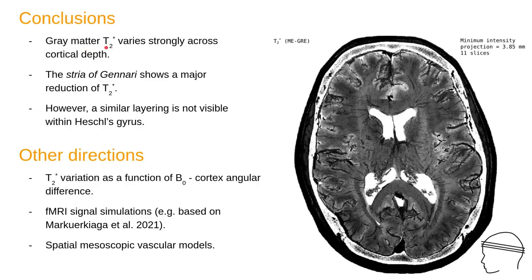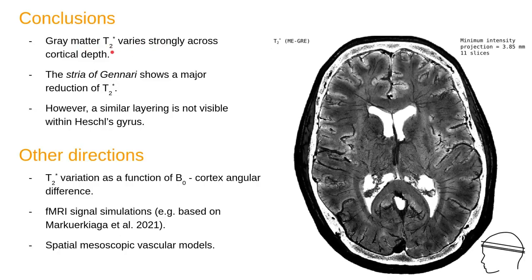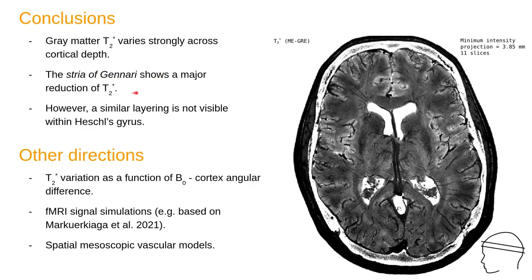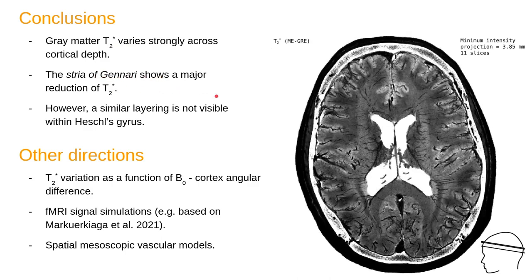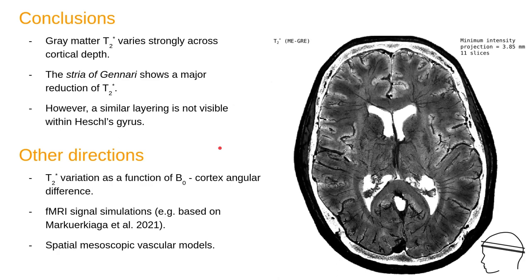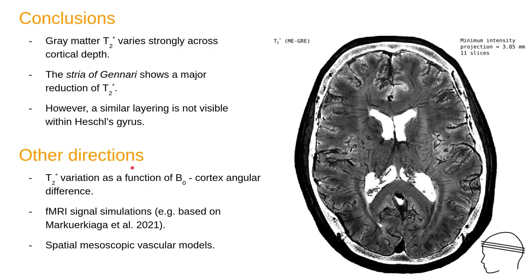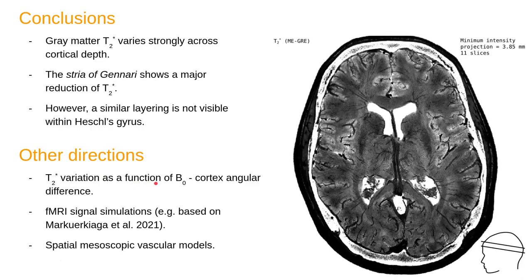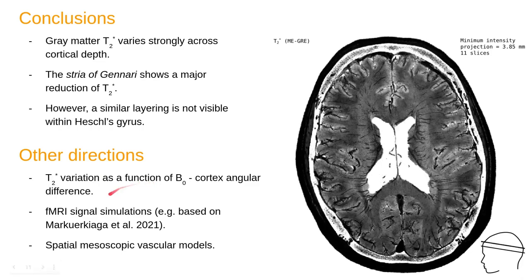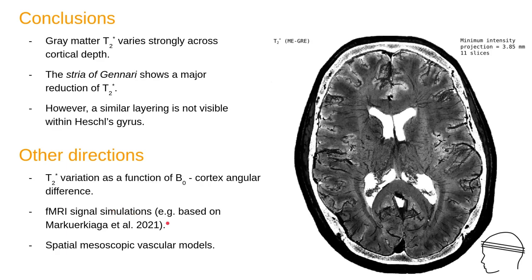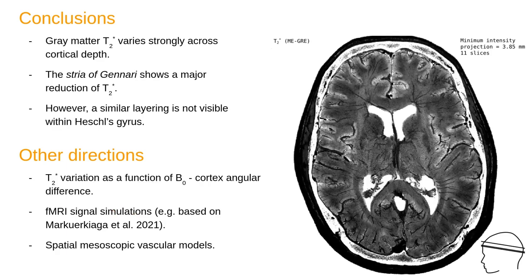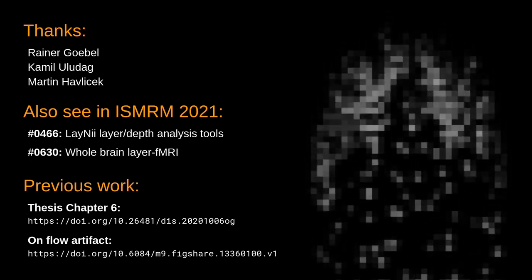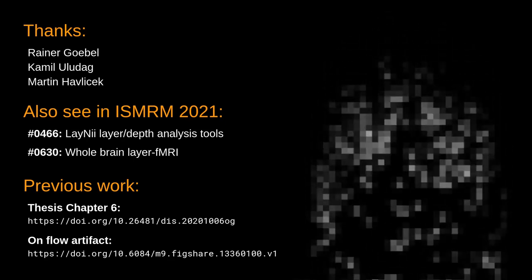To conclude, gray matter T2 star varies strongly across cortical depth. The Stria of Gennari shows a major reduction of T2 star. However, a similar layering is not visible within Heschl's gyrus. Due to timing constraints, I am unable to show you the T2 star variation as a function of V0-to-cortex angular difference, some of the fMRI simulations that we have done, and further spatial mesoscopic vascular models. With that, I would like to thank you all for listening.